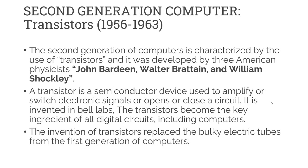The second generation of computers is characterized by the use of transistors. Transistors were invented in 1956 by three American physicists: John Bardeen, Walter Brattain, and William Shockley. A transistor is a semiconductor device used to amplify or switch electronic signals, or to open or close a circuit. It was invented at Bell Labs and became the key ingredient of all digital circuits, including computers. The invention of transistors replaced the bulky vacuum tubes from the first generation.